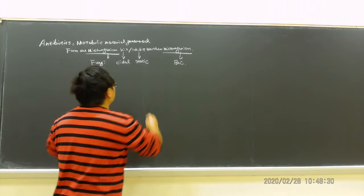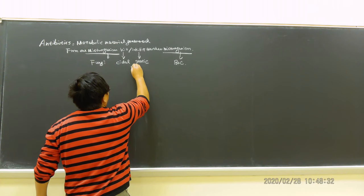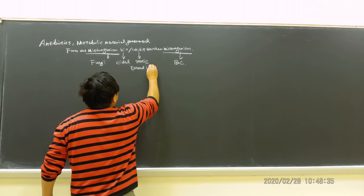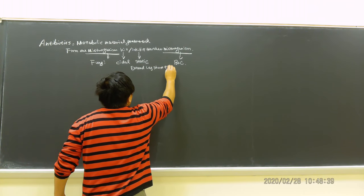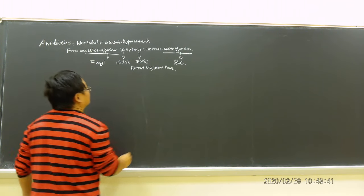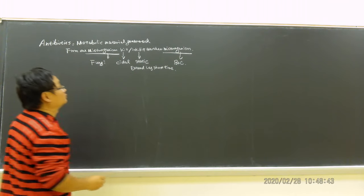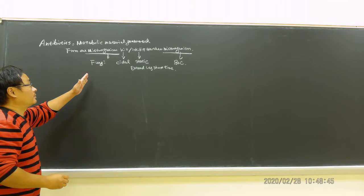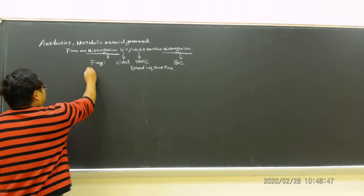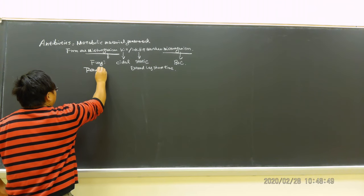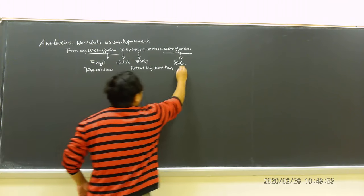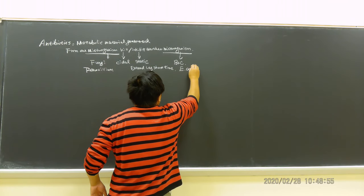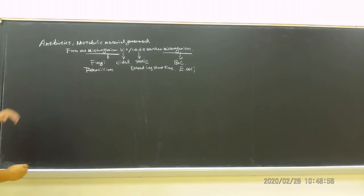Inhibit usually means extend lag phase time, and the bacteria is still there, still surviving. So those are the things I want to mention. Fungi like penicillin can kill bacteria like E. coli. So this is the concept.